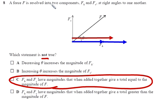A force F is resolved into two components, F horizontal and F vertical at right angles to one another. Which statement is not true? Decreasing theta increases the magnitude of FH, yes it would. Increasing theta increases F vertical, yes it would. F horizontal and F vertical have magnitudes that when added together give a total equal to the magnitude of F. No, that's not true.